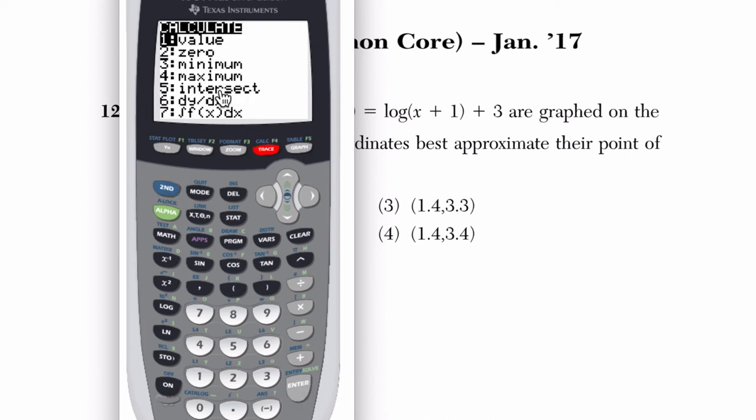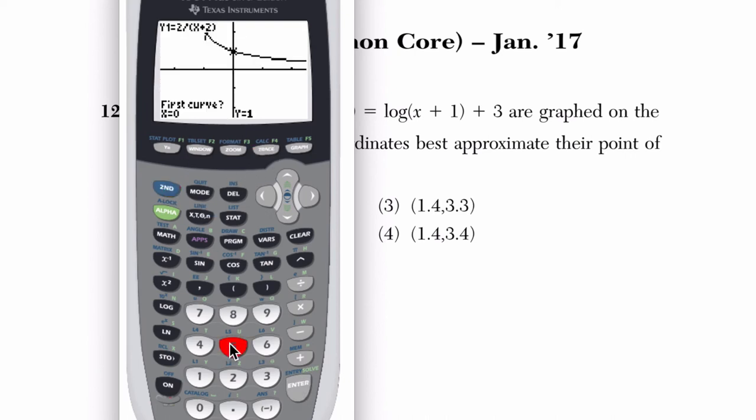I hit second, calc. Choice 5 is intersect. Hover around the inverse function, a reciprocal function, which is an inverse function. I think I'm saying that right. It's 1 over x, essentially.